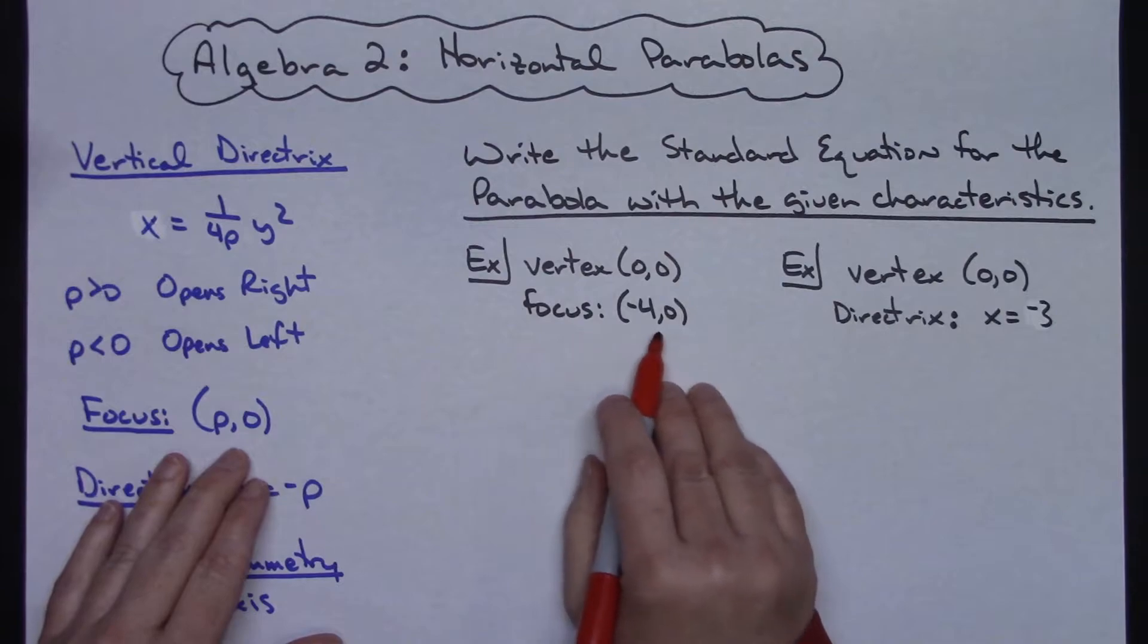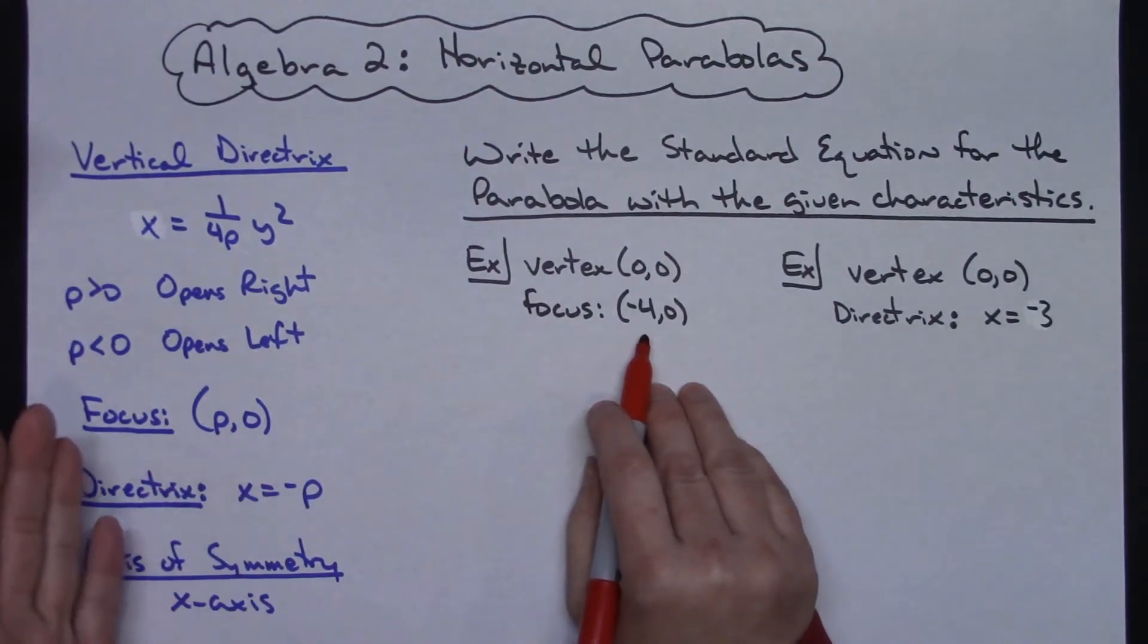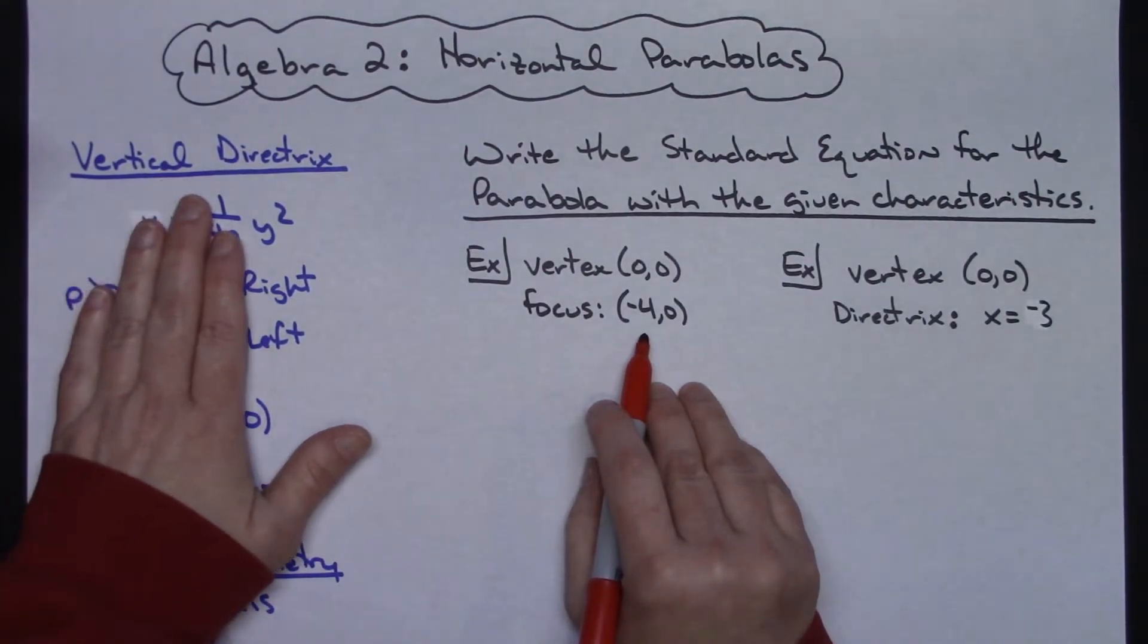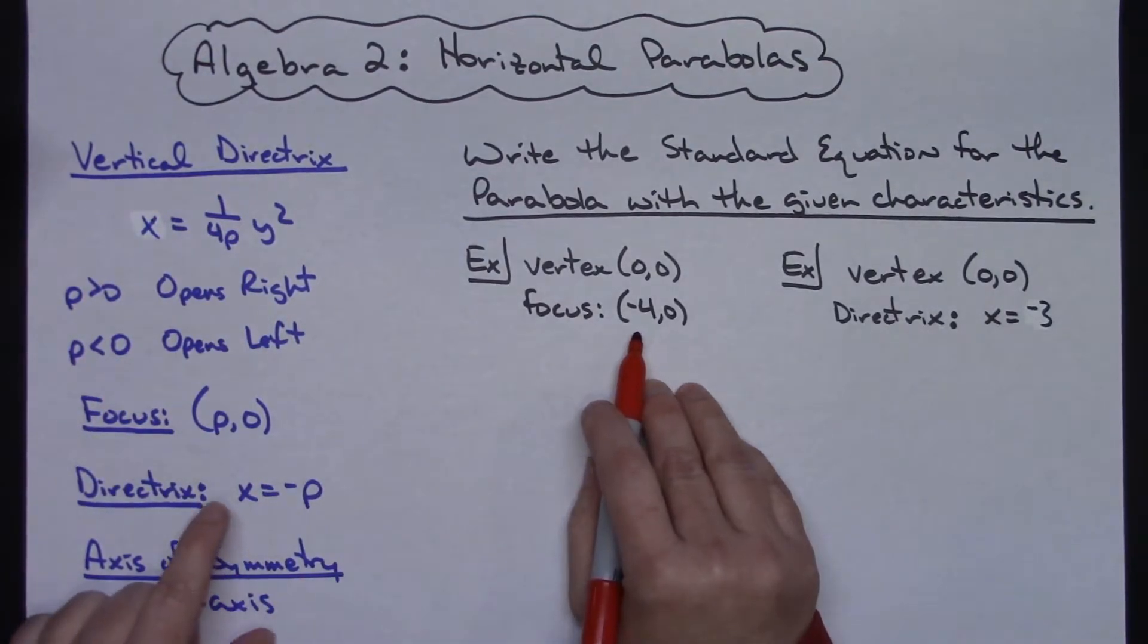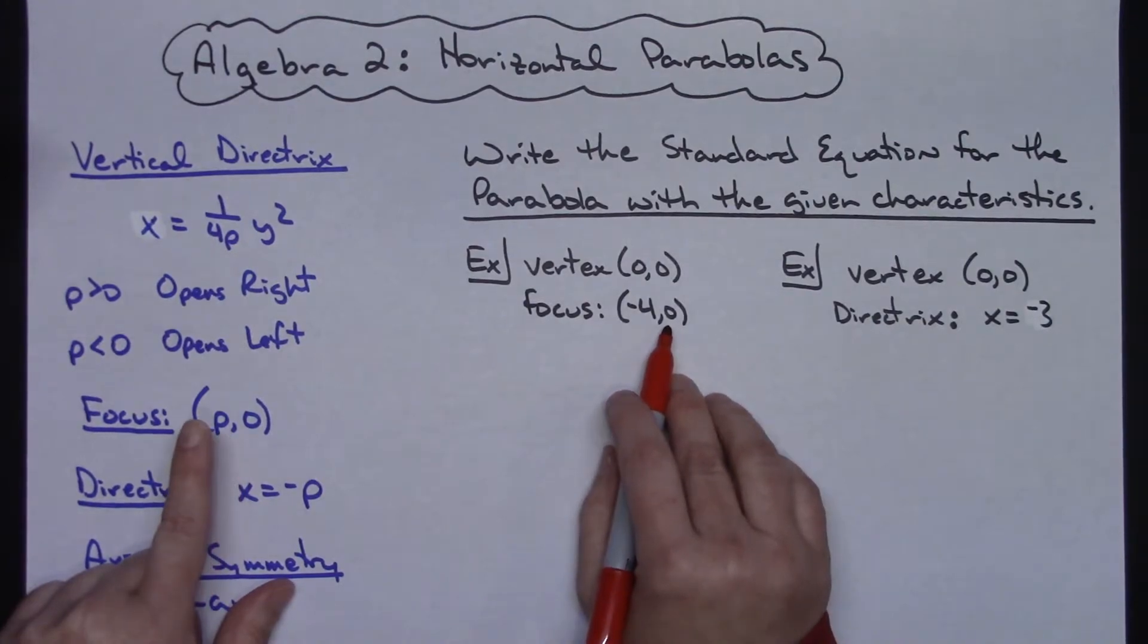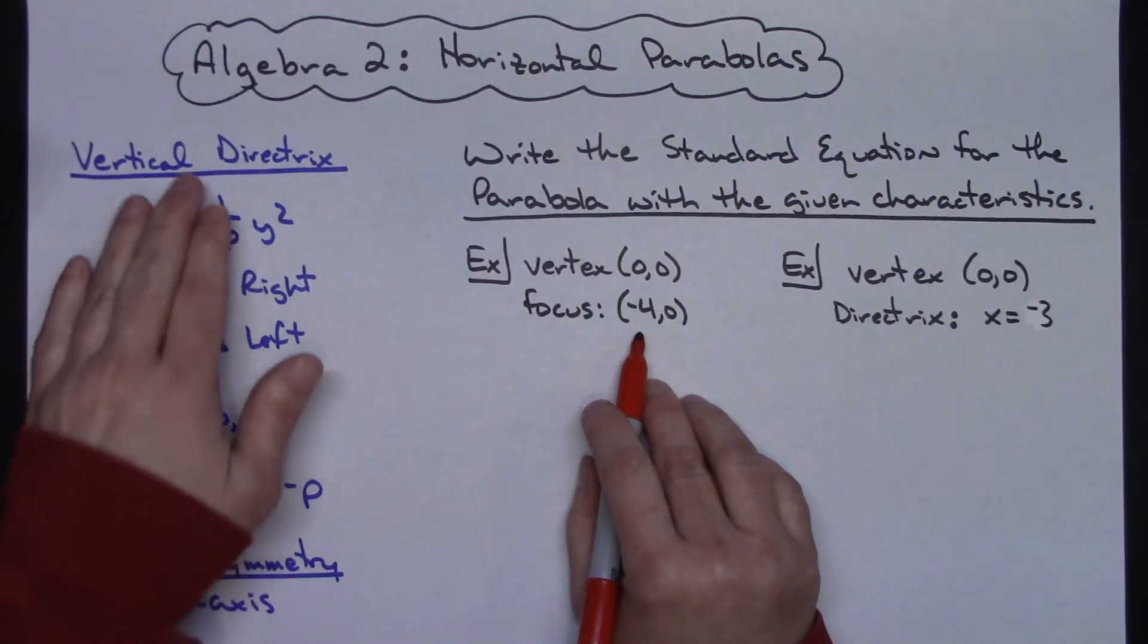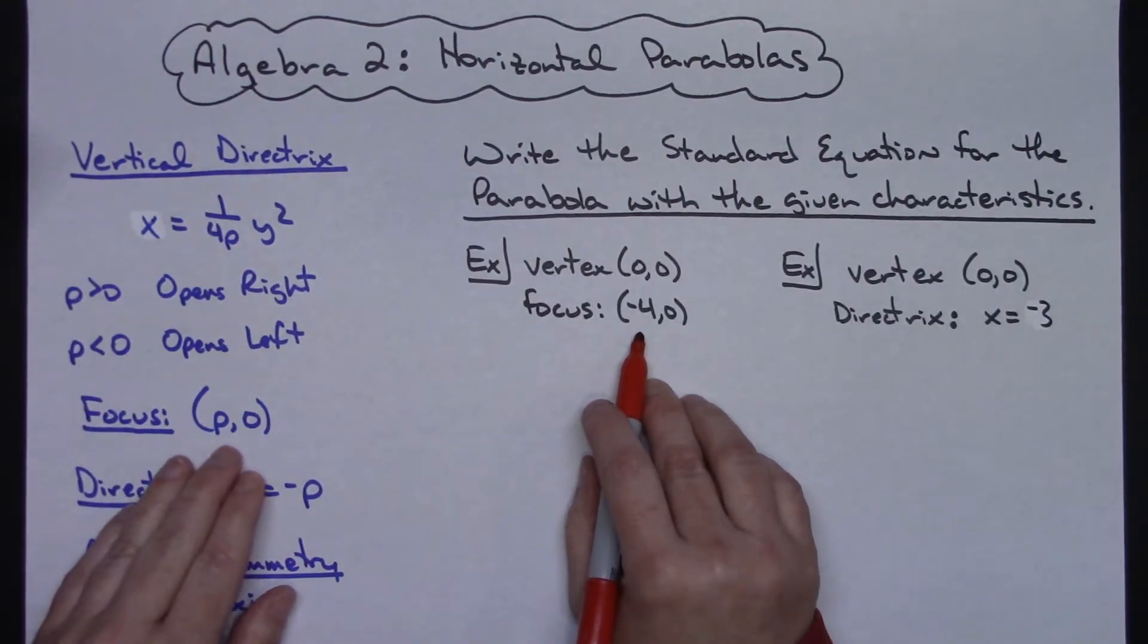And then we're going to have to take a look at this focus and then see whether it is indeed the one that has the vertical directrix or whether or not it would be the other one. But looking here at my focus, I've got a negative 4, 0. So my focus is p,0 so it definitely is a horizontal parabola with vertical directrix.